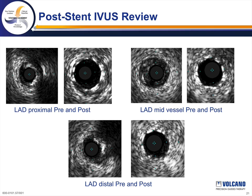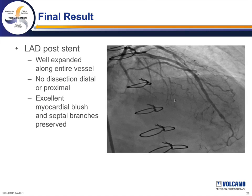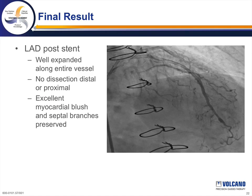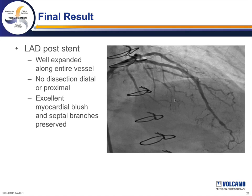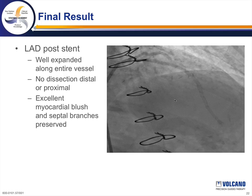Still images taken pre and post stent from our IVUS runs show: in the proximal LAD, concentric mildly calcified plaque before stenting with a well-expanded 3 mm stent; in the mid vessel, fibrotic concentric plaque prior to stenting with a well-expanded 2.5 mm stent; in the distal vessel, a calcified eccentric stenosis with a well-expanded stent after high-pressure non-compliant balloon expansion. The final angiographic result showed a well-expanded stent along the entire vessel with no dissection and excellent myocardial blush with preserved septal perforating branches.